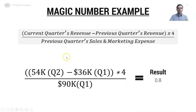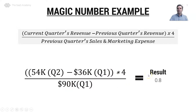A quick example: let's say in Q2 our recurring revenue was $54,000, and in Q1 it was $36,000. We take $54,000 minus $36,000, annualize it, and divide by our sales and marketing expense in Q1 of $90,000. That results in a SAS magic number of 0.8.